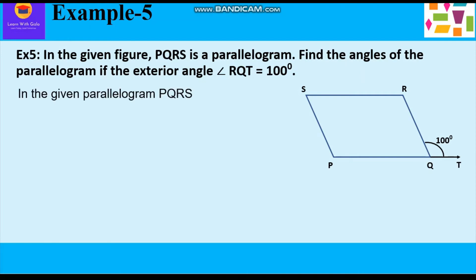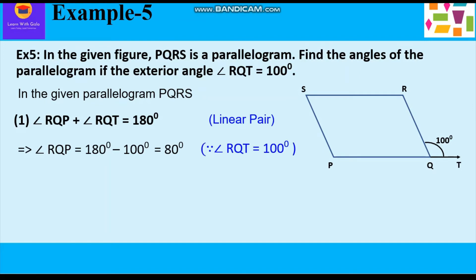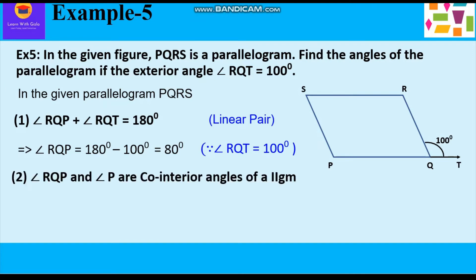In the given parallelogram PQRS, we can see that angle RQP and angle RQT form a linear pair, so their sum is 180 degrees. So angle RQP plus angle RQT equals 180 degrees. Since RQT is 100 degrees, angle RQP will be equal to 180 minus 100, which comes to 80 degrees.